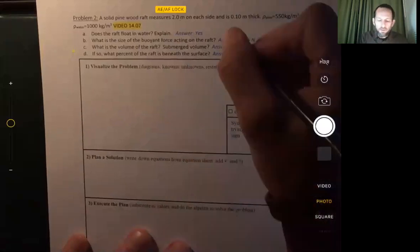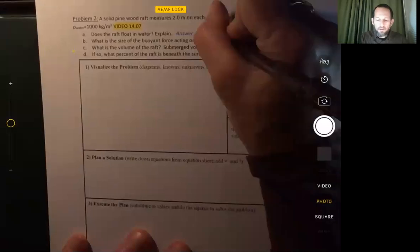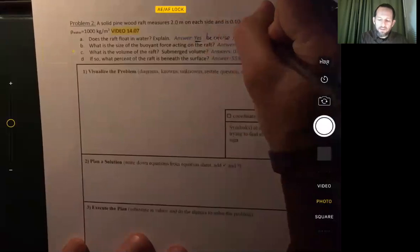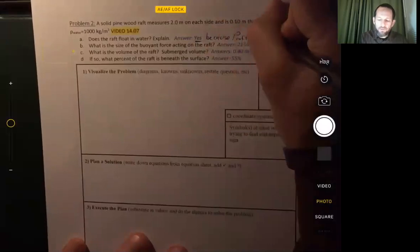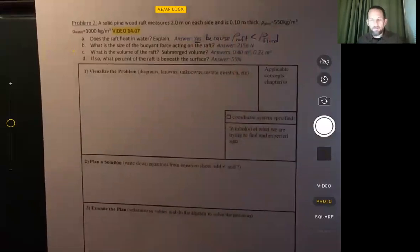Well, for this, the answer obviously is yes, because the density of the raft is less than the density of the fluid. Okay, so anytime the density of an object is less than the density of the fluid it's in, that object is going to float. That's the reason a helium-filled balloon will float in a room filled with air. Air is the fluid and the helium-filled balloon has a density less than the air. All right, so same idea here.